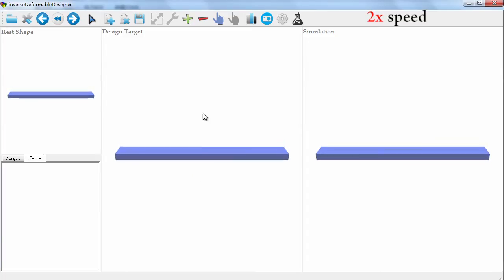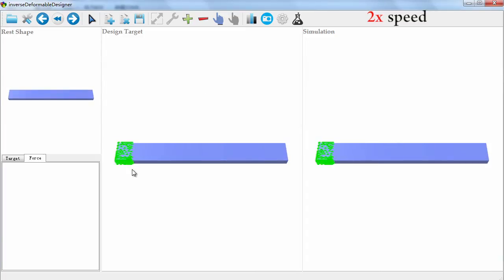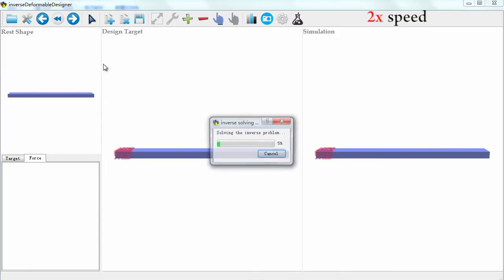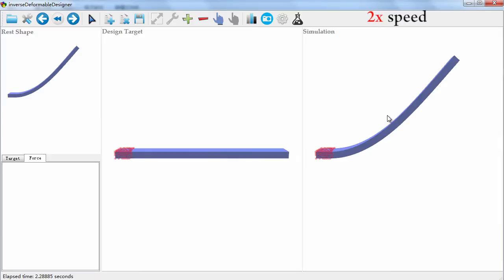Our system starts by loading the desired target shape. The user can constrain certain parts of the shape or apply external forces. Our system computes the resulting rest shape in a few seconds and presents it to the user. The computed shape will deform into the target shape.